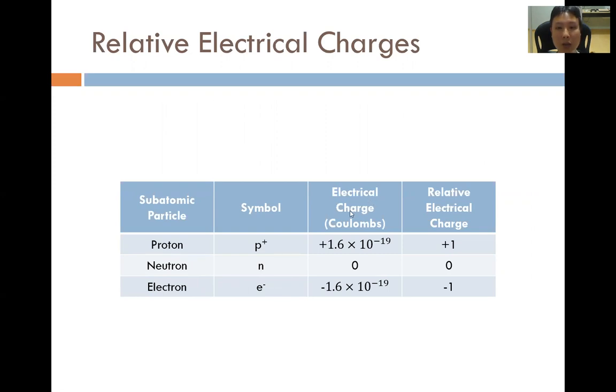The electrical charge measured in Coulombs, which is basically the SI units for measurement of charge, is positive 1.6 times 10 to the power of negative 19 Coulombs, a very small number indeed. The neutron has a charge of exactly zero, whereas the charge of the electron is exactly opposite in sign to that of the proton: negative 1.6 times 10 to the power of negative 19 Coulombs.